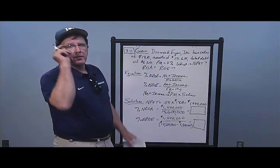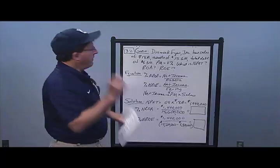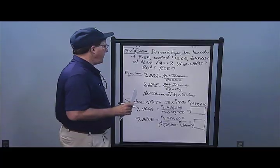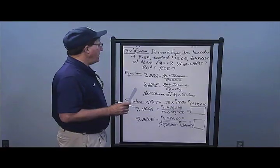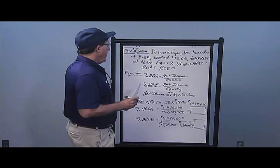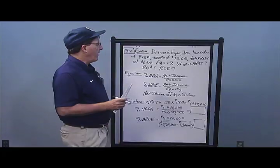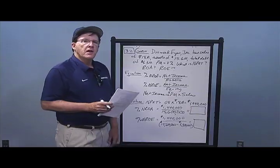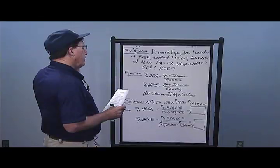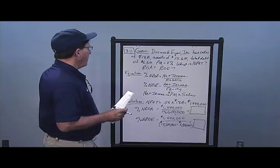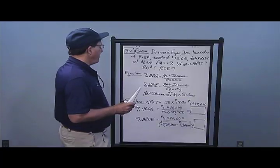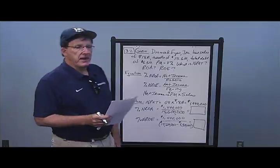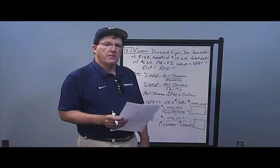In Problem 2, Diamond Eyes has sales of $18 million, assets of $15.6 million, total debt of $6.3 million, and a profit margin of 8%. We want to find net income, return on assets, and return on equity. To get return on anything, I simply take net income divided by that thing.